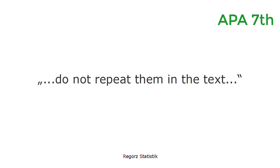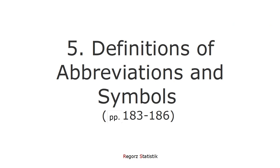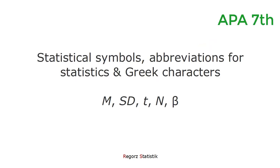Repeating all your descriptive data in the text is not allowed in APA 7. As a last point, there is a rule about definitions of abbreviations and symbols. In APA 7, on pages 183 to 186, there is a list with statistical abbreviations and symbols. When it comes to the definition, there is a distinction that has to be made. Statistical symbols such as M or SD, abbreviations for statistics like T, or Greek characters such as alpha or beta, are not defined in the paper — you use them without defining them.